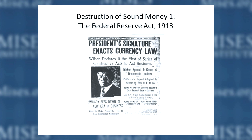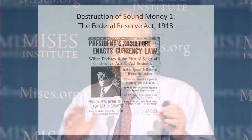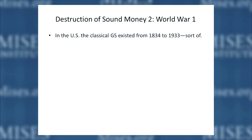Where did the destruction of sound money begin? It began with World War I, and actually before World War I when President Wilson signed the Federal Reserve Act right before Christmas of 1913, establishing the Federal Reserve Bank as the central bank of the United States. It was supposed to be decentralized — there were 12 different districts and 12 different reserve banks — but it was eventually controlled from Washington. Initially, New York was the dominant bank. The classical gold standard existed from about 1834 to 1933 in the U.S., sort of — it really didn't exist after World War I, but there were still some remnants that constrained government.